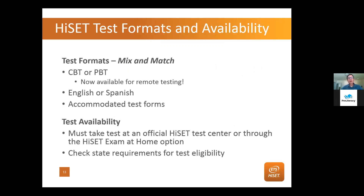You can mix and match: take computer-based or paper-based testing, remote testing, and take it in English or Spanish. Disability Services can accommodate test forms for special needs. You must take the test through an approved test center or through the at-home option. You can check your state requirements for test eligibility simply by Googling 'HiSET requirements' in your state, or go to HiSET.org and look up your state.